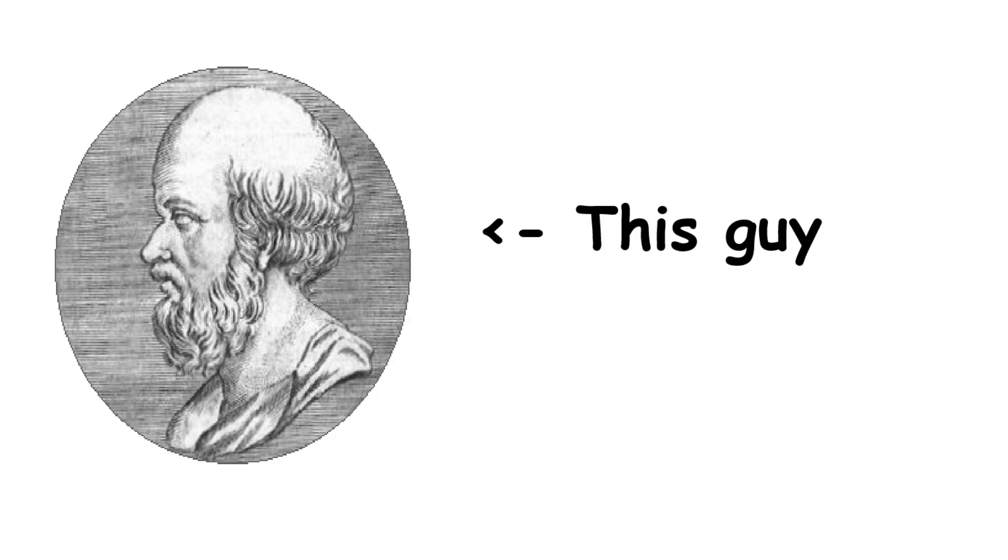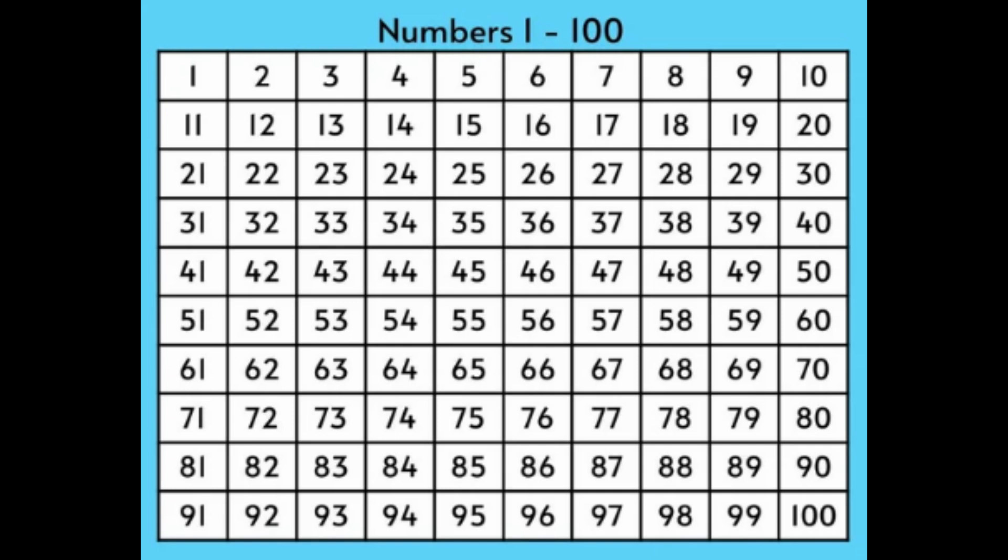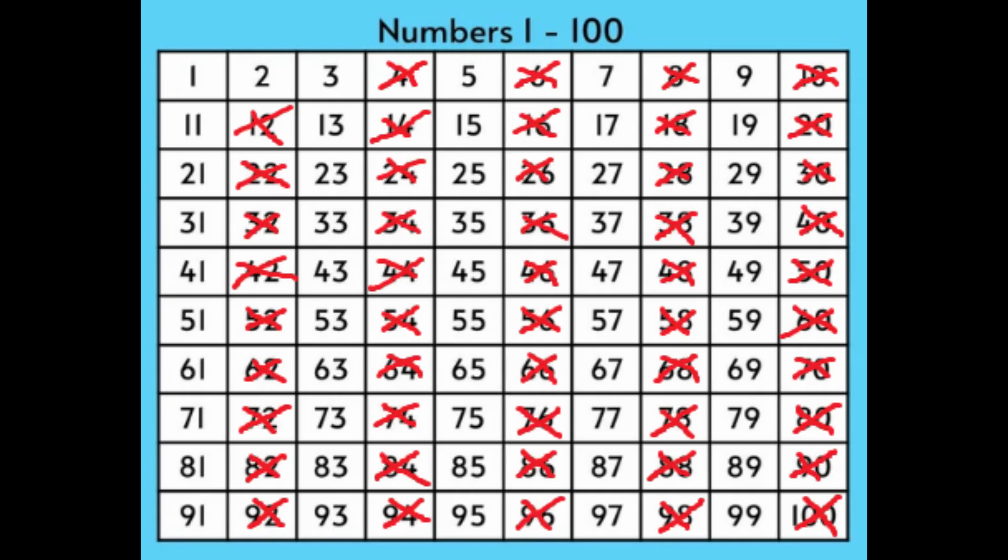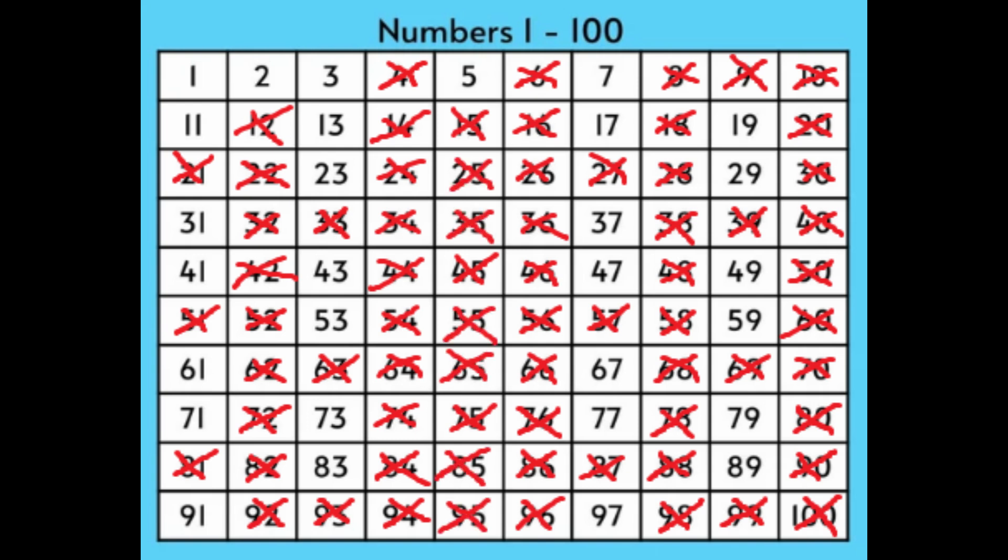The sieve of Eratosthenes wouldn't work properly if we said that one is a prime number. Now let's write every number from 1 to 100. And then, let's cross off every second number except 2. So let's do that. Very nice. That's what I'm talking about. So 3 remains. So now let's cross off every third number except 3. Very good. 5 remains. So let's do every fifth number except 5. I shouldn't need to specify that at this point, but still.